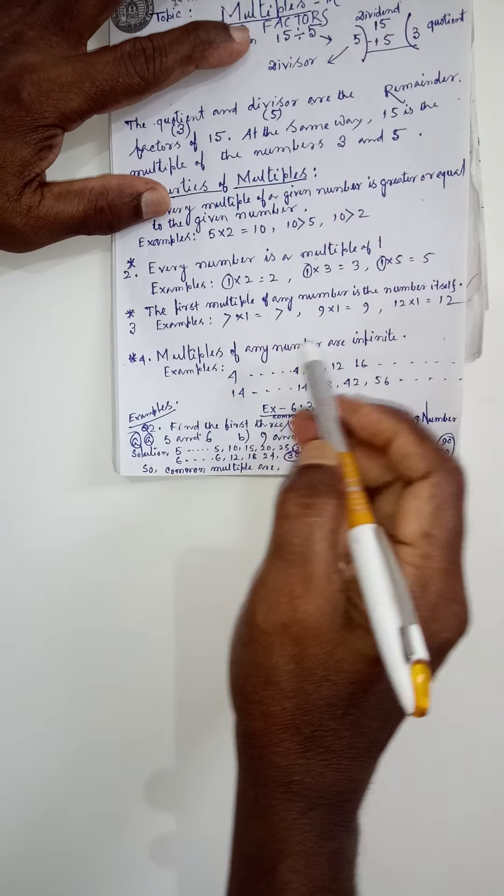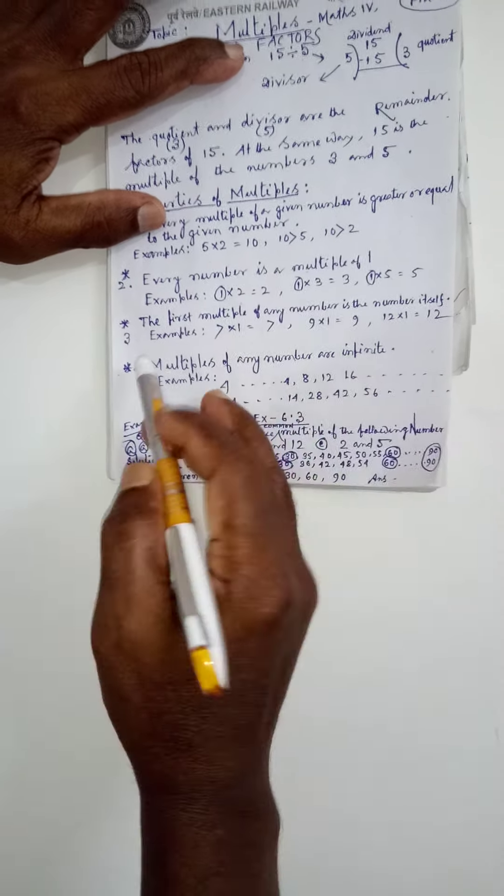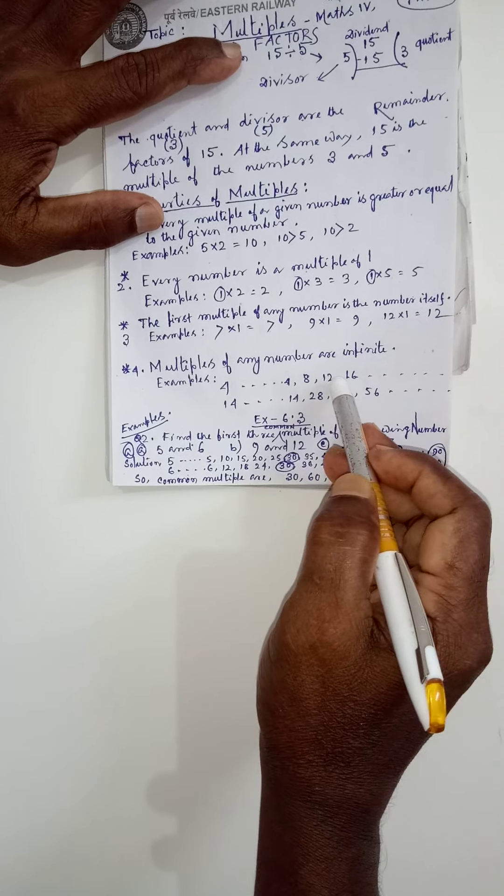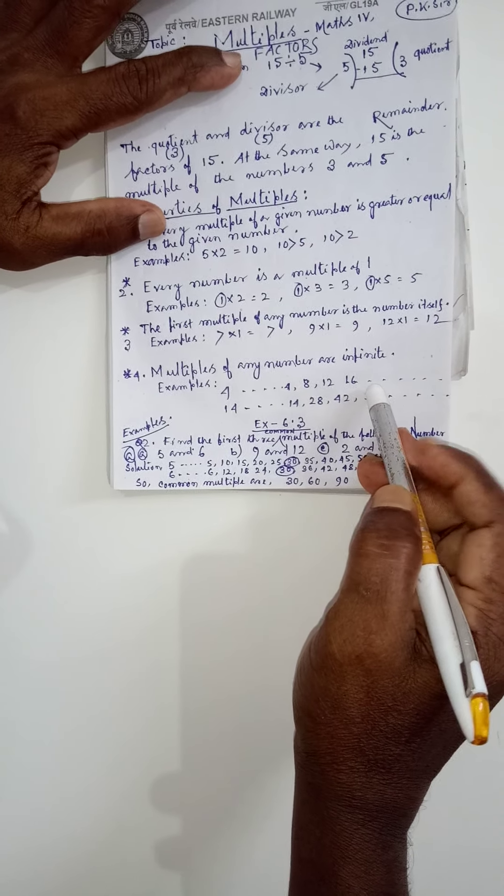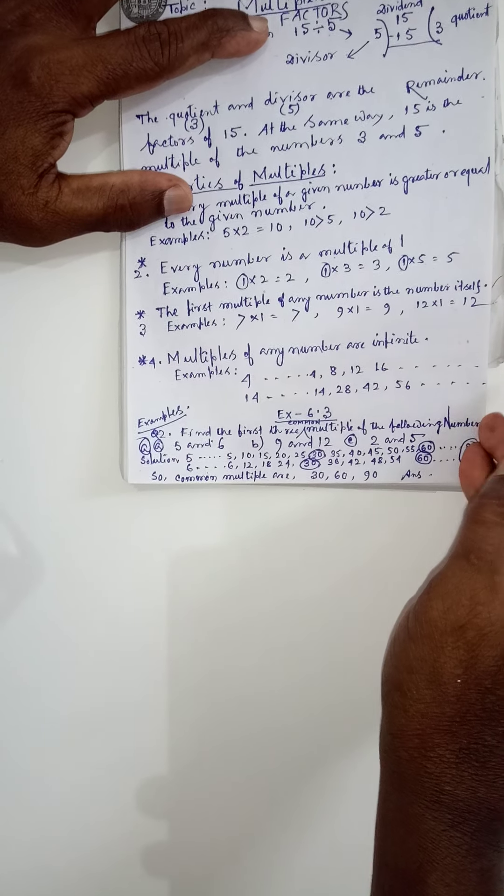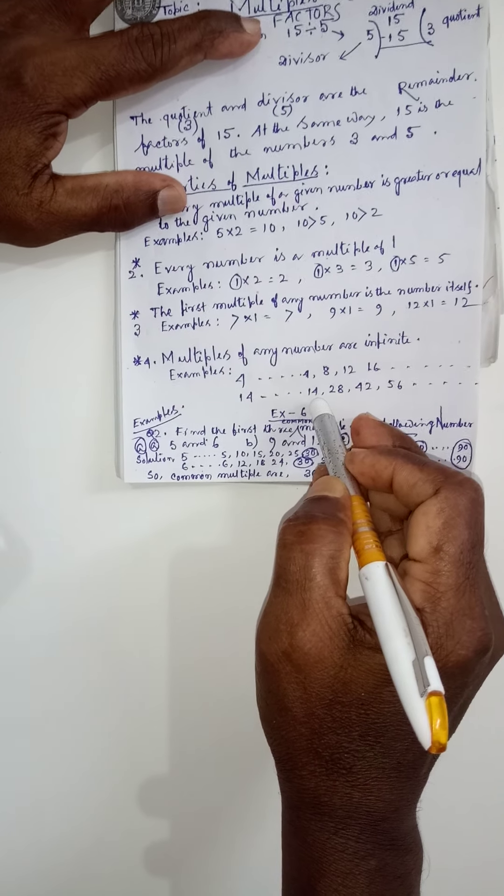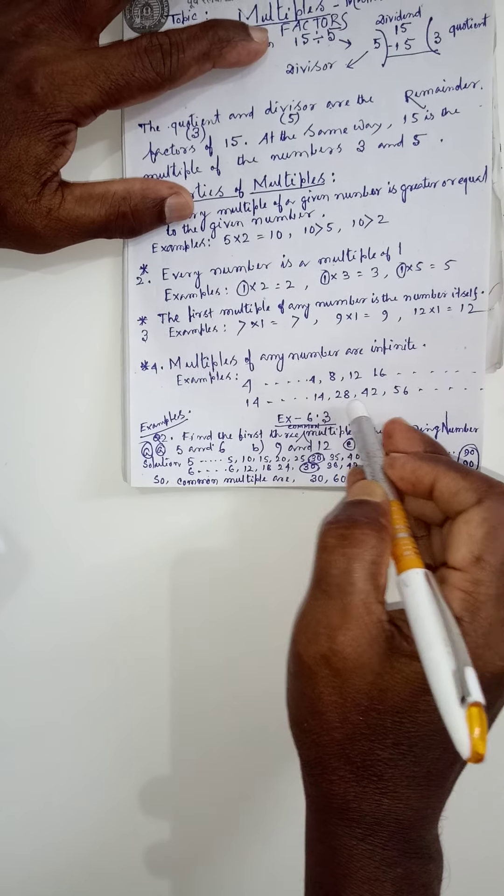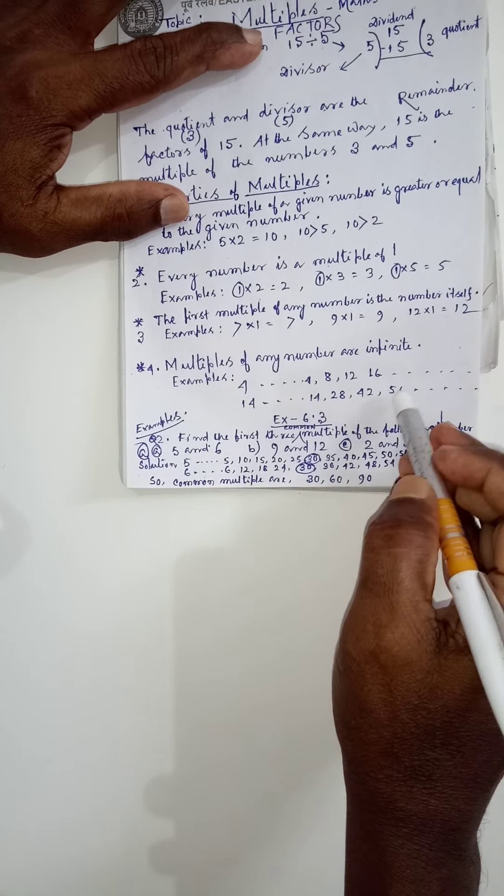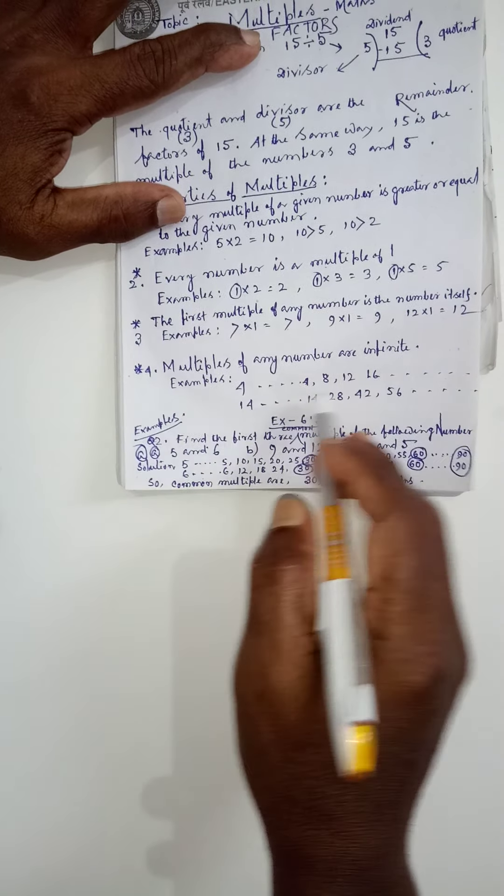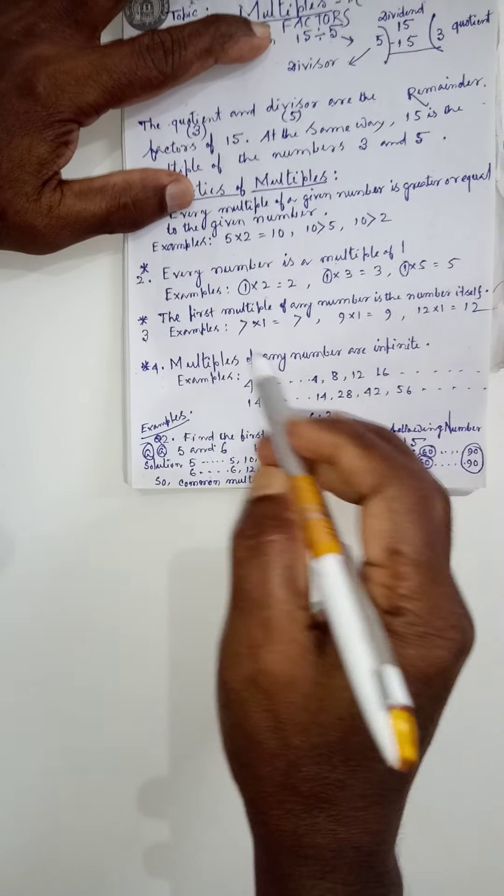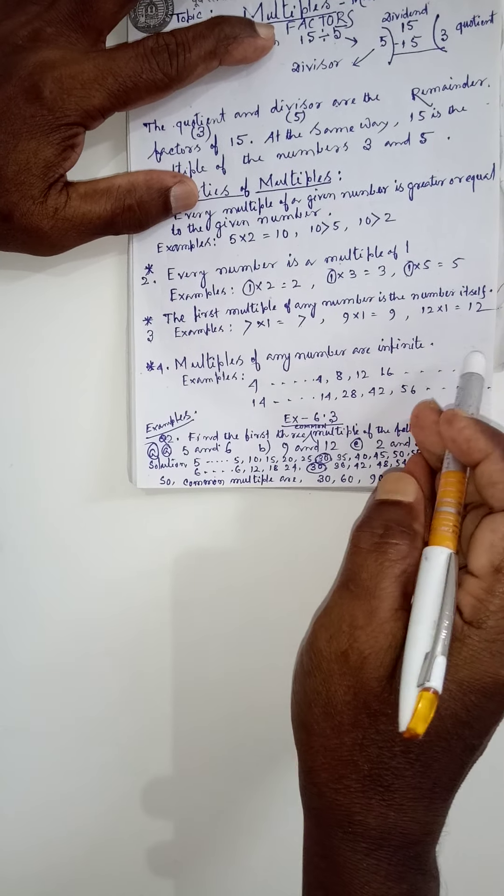The multiples of any numbers are infinite. Why I say like this? Suppose 4 ka multiple ka hai. 4 one ja 4, 4 two ja 8, 4 three ja 12, 4 four ja 16 and like this. 14 ka multiple ka hai carry on increasing. 14 one ja 14, 14 two ja 28, 14 three ja 42, and 14 four ja 56. So we have come to the conclusion that multiples of any numbers are infinite.